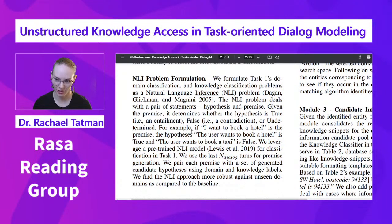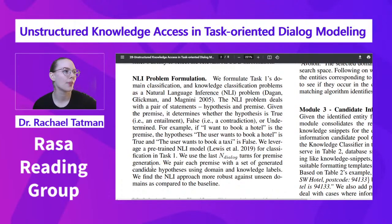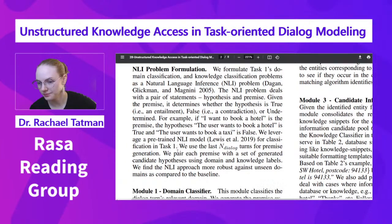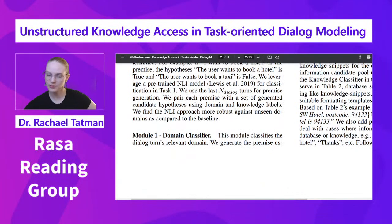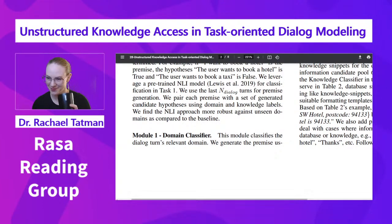They use the last N dialogue turns for premise generation and pair each premise with a set of generated candidate hypotheses using domain and knowledge labels. For inference, they use Hugging Face's classification as NLI-based zero-shot classification pipeline, initially fine-tuned on MultiNLI — a natural language inference dataset. They further fine-tune the model on MultiWOZ 2.2 and DSTC-9 Track 1 training set on all eight domains of MultiWOZ 2.2.